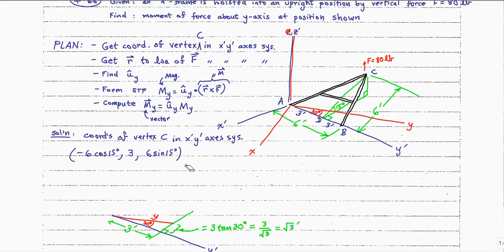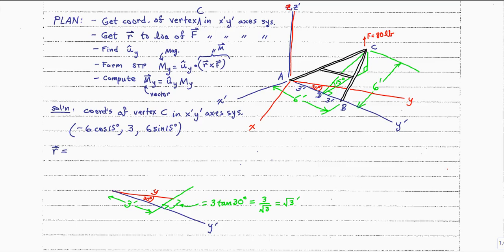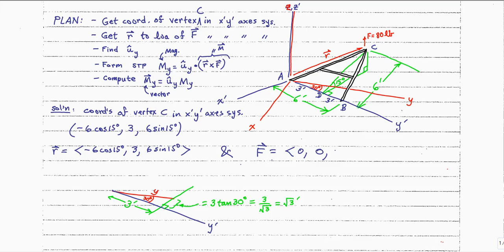Now I can formulate my r vector — drawn in red, going from the origin at A out to the vertex at C. That is simply obtained by changing the parentheses into angle brackets with those same coordinates, because the vector emanates from the origin at A. Then the force vector is easy: it has no F_x' component (zero), no F_y' component (zero), but it does have an F_z' component of 80 pounds.